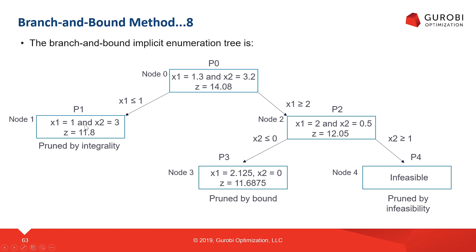All the leaves of the tree have now been explored and there is nothing else to do. At this point we can determine the best integral solution found. The best integral solution found by this branch and bound method is defined by node 1, which solved problem P1. The optimal solution is x1 equal to 1 and x2 equal to 3, with an optimal objective function value of 11.8.